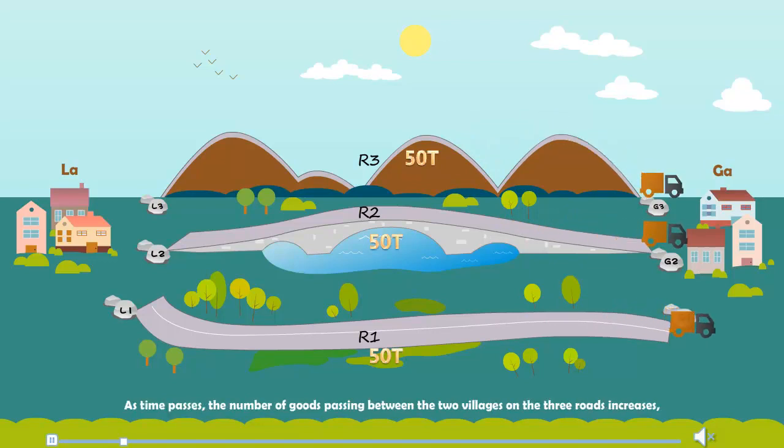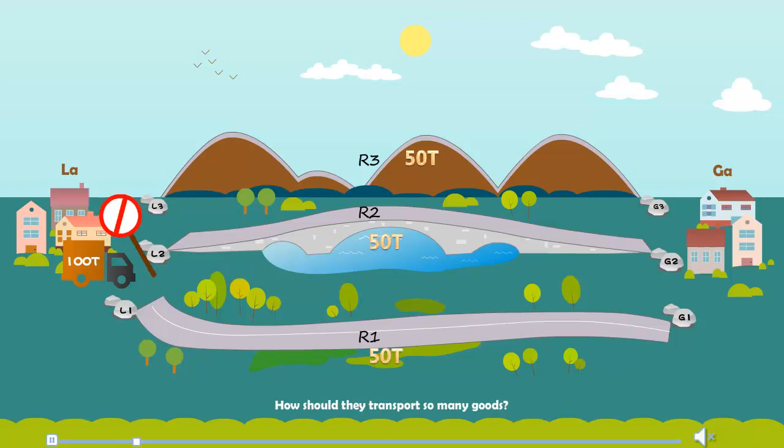As time passes, the number of goods passing between the two villages on the three roads increases, sometimes exceeding 100 tons. How should they transport so many goods?